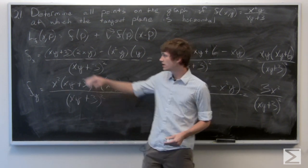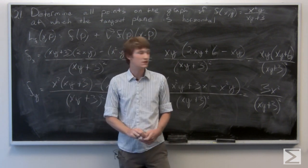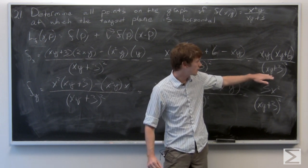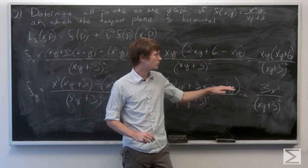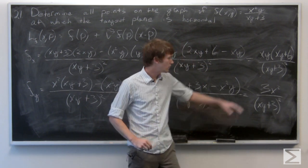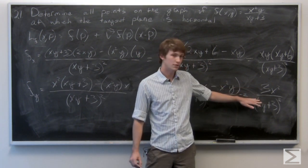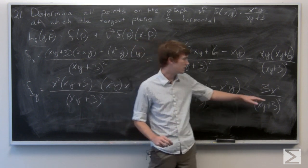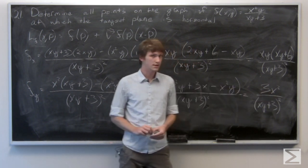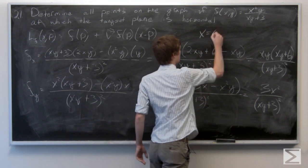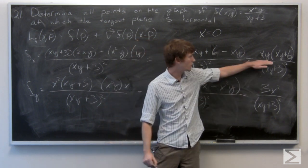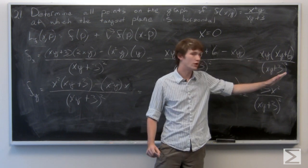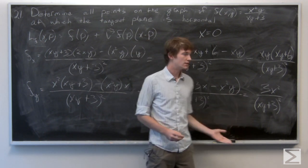Now we want the gradient vector to be zero, so we want both partial derivatives to be zero. Note that the denominator is always non-negative and equals zero when xy equals negative 3, so we need to exclude that case. Looking at the partial derivative with respect to y, the numerator only consists of x's, so x must equal zero. Plugging x equals 0 into the first partial derivative, the entire numerator is multiplied by x, so it's automatically zero regardless of y.